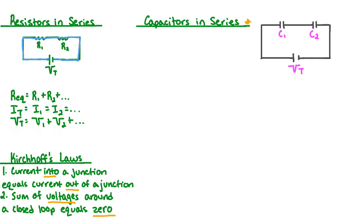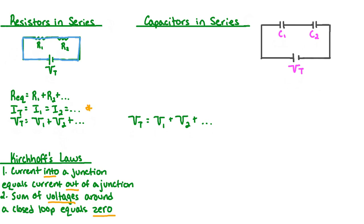For our capacitors in series, we have a connection with the resistors in series in terms of potential difference being split amongst the individual components. We can say the total potential difference of the battery, Vt, is equal to V1 plus V2, and so on for as many capacitors as we have in series. For capacitors in series, just as in parallel, we study capacitors that are fully charged, at which point there is no current in the circuit. We therefore look at charge. In terms of charge, the total charge Qt is equal to Q1, which is equal to Q2, and so on — all charges are equal.